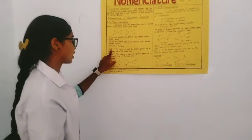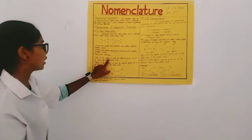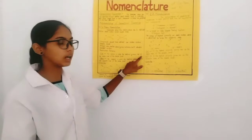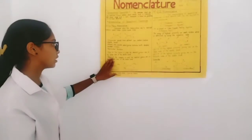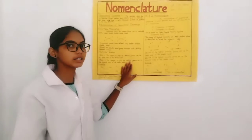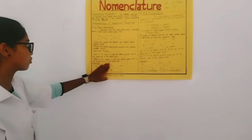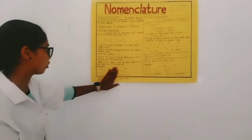In cis isomerism, the isomers in which the identical groups are on the same side of the double bonds and in trans, the isomerism in which the identical groups are on the opposite sides of double bond.